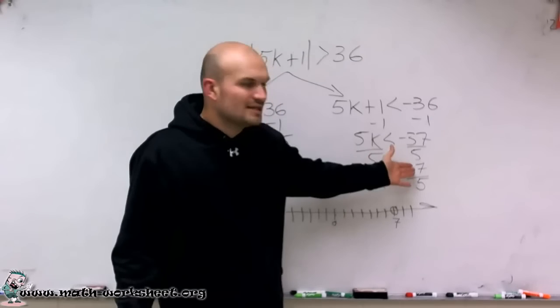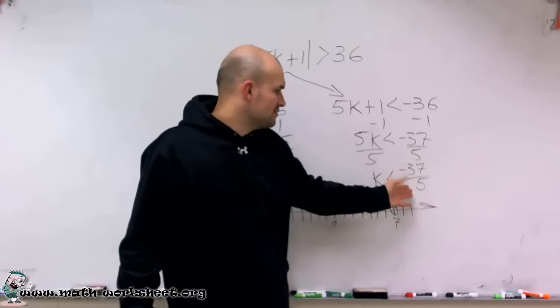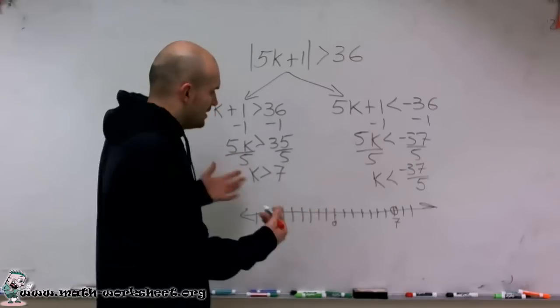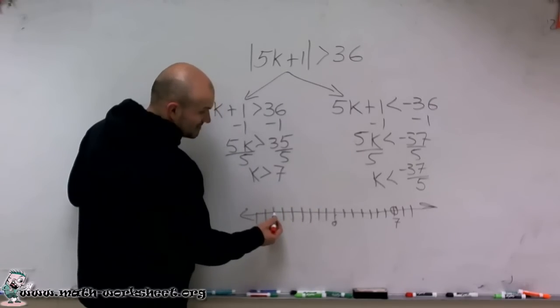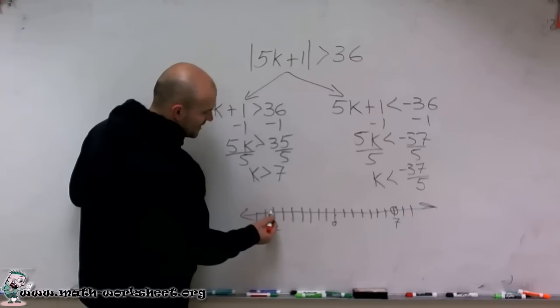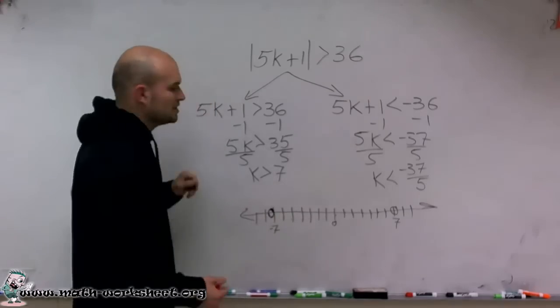Well, you can convert this over to a mixed number, which would be negative 7 and 2 fifths. Therefore, you're going to get a little bit larger than negative 7, or sorry, a little bit smaller than negative 7, but not exactly over to 8. So this estimated is going to be right in there.